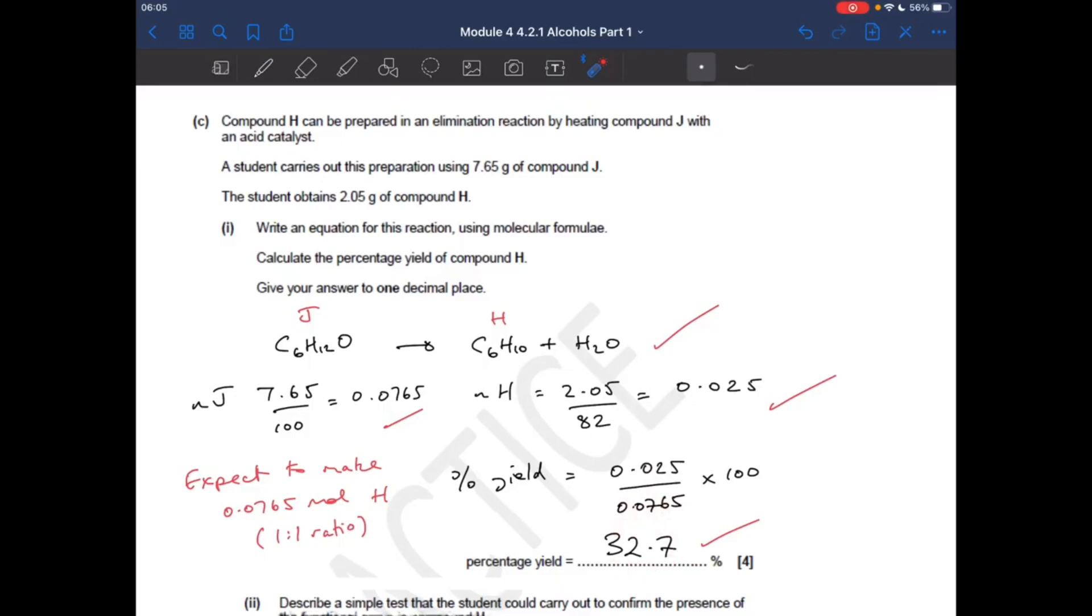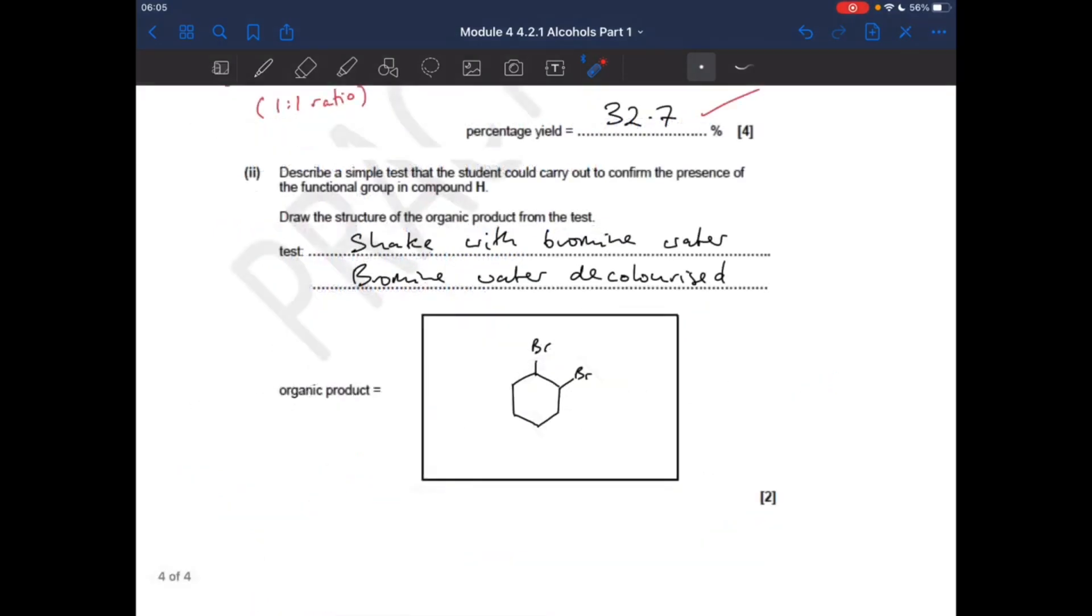And the final question, describe a simple test the student could carry out to confirm the presence of the functional group in compound H. Obviously, it's the bromine water test. So you shake the compound with bromine water. And obviously, if the double bond's there, the bromine water should be decolorized. And the organic product, the Br2 molecules, is going to add across where the double bond was. The double bond was there. So you get that 1,2-dibromocyclohexane compound formed.